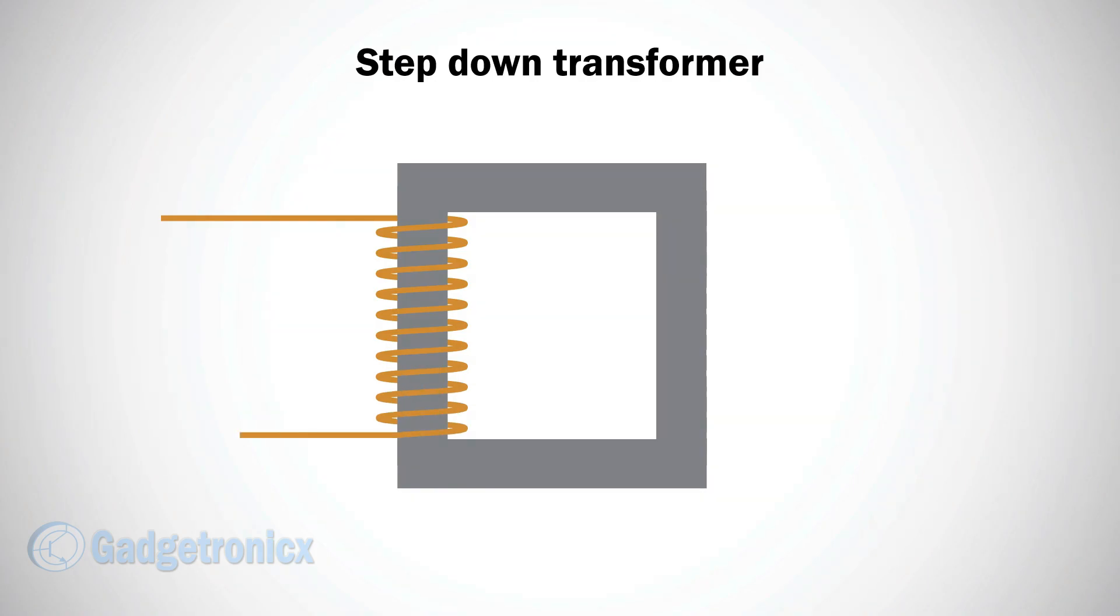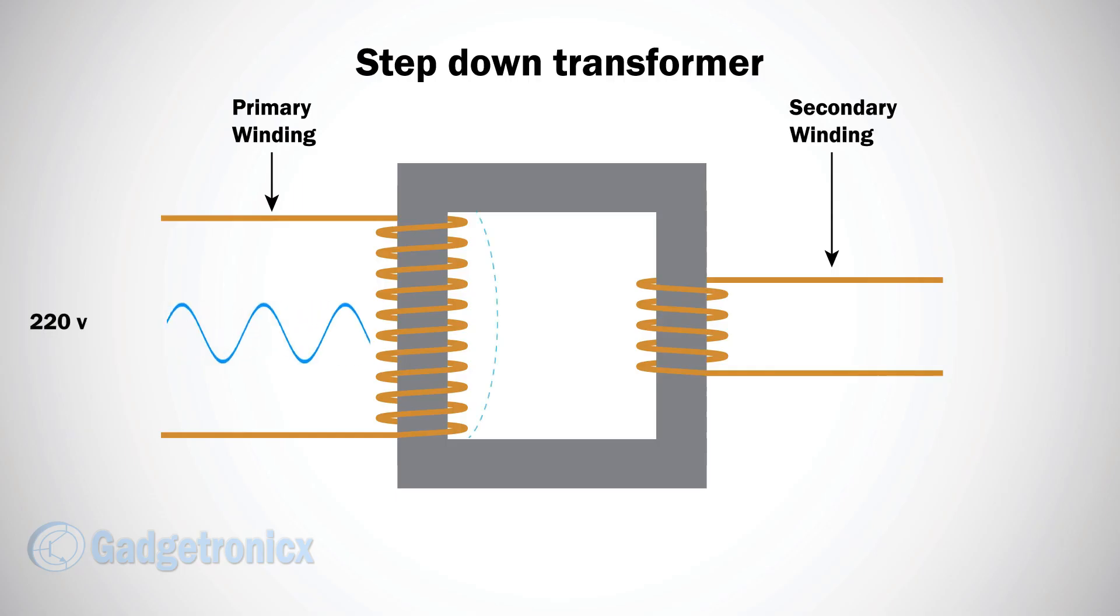Let's say in a transformer, the primary coil has 10 windings in it and secondary side has only 5 windings in it. Now a voltage source of 220V is applied to the primary side.